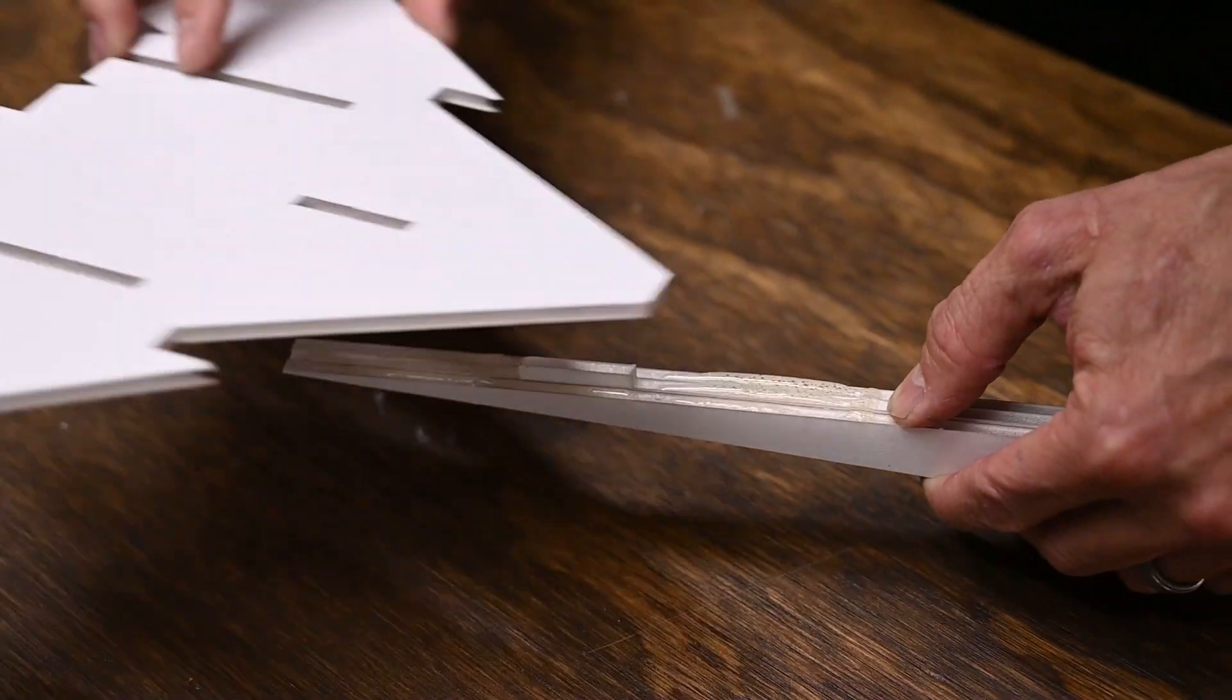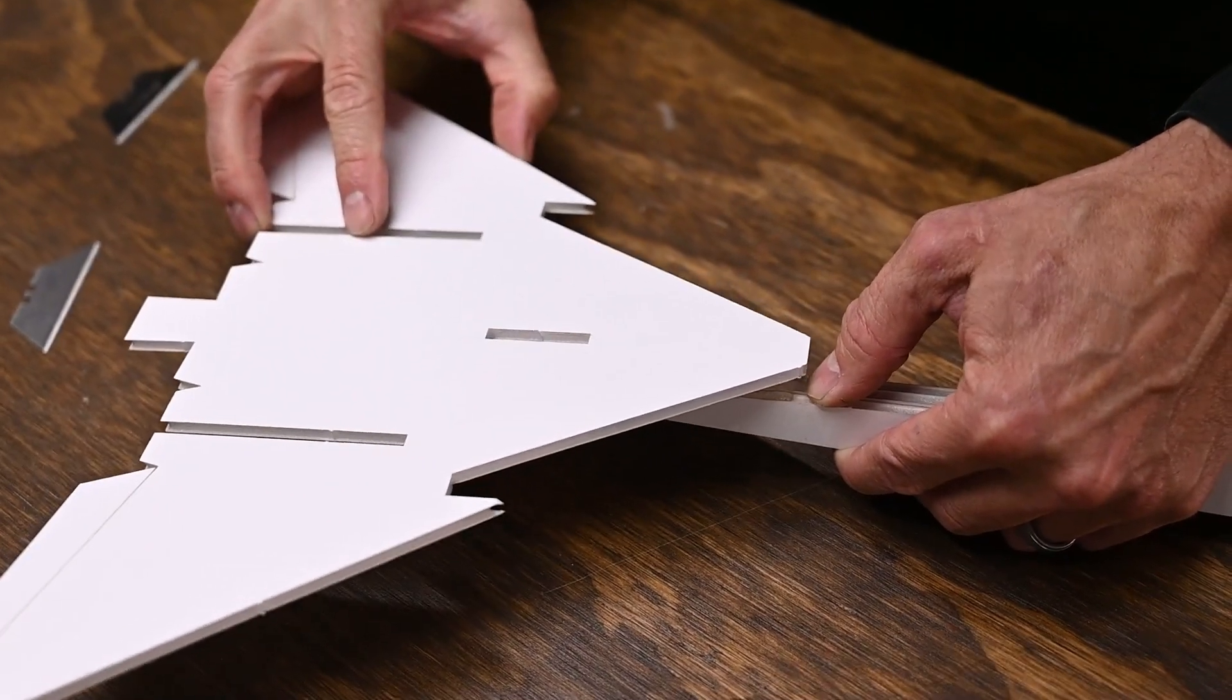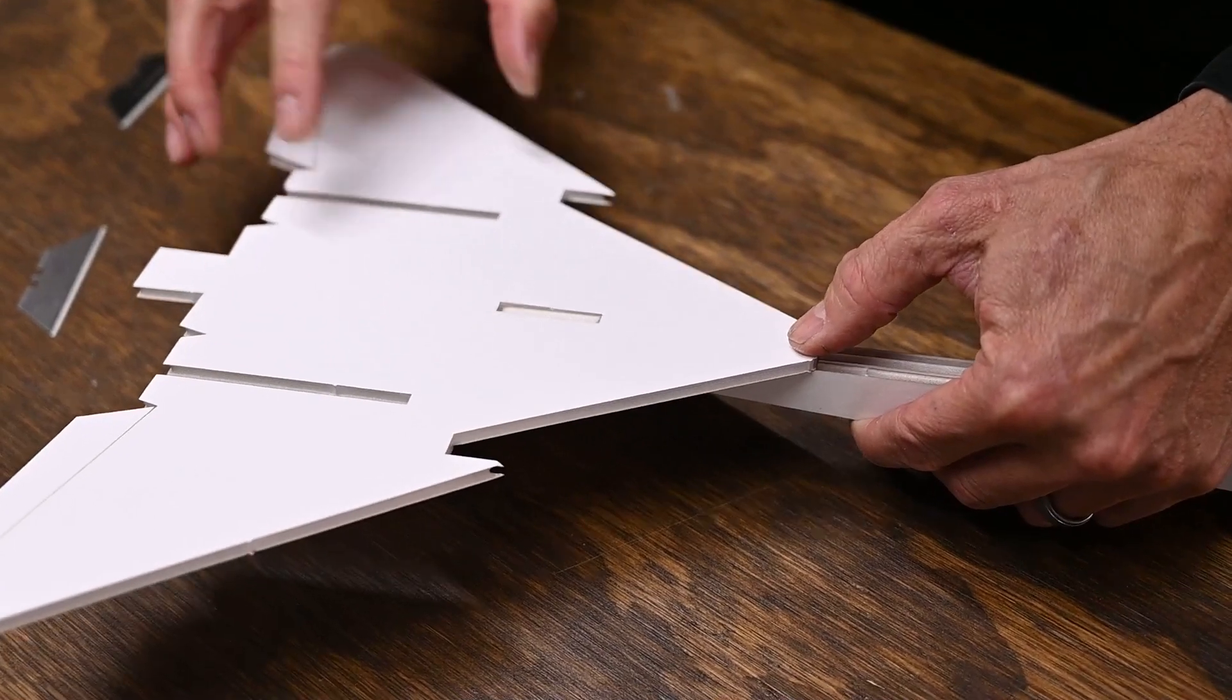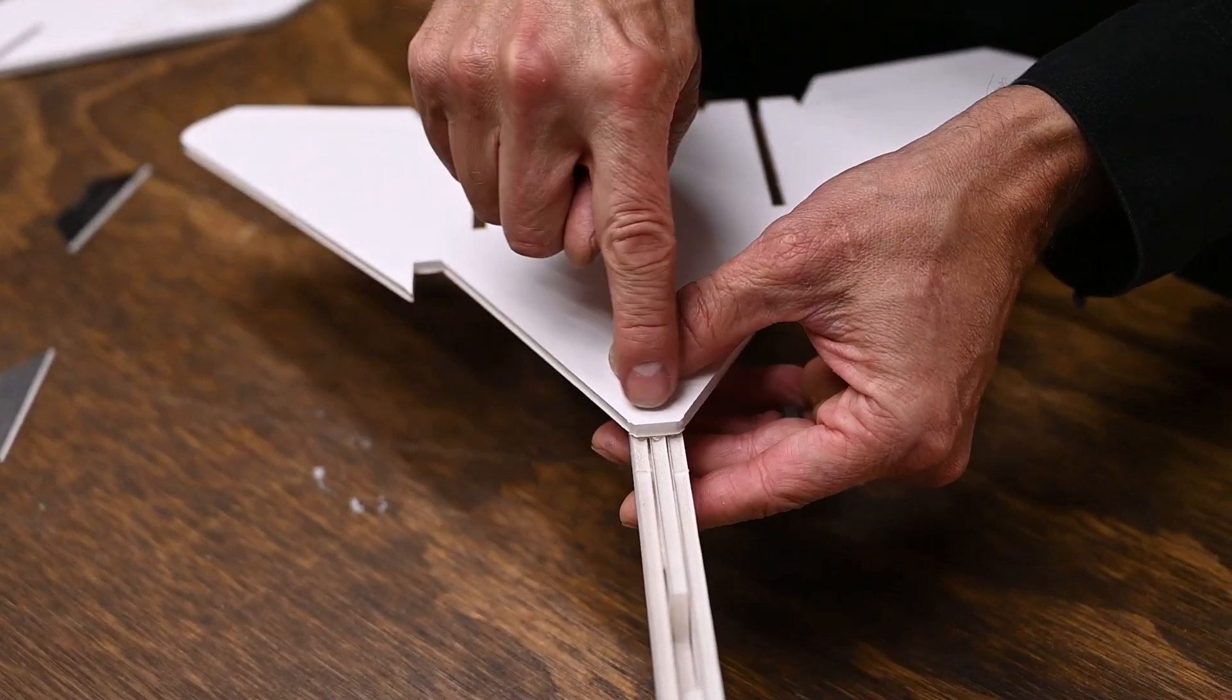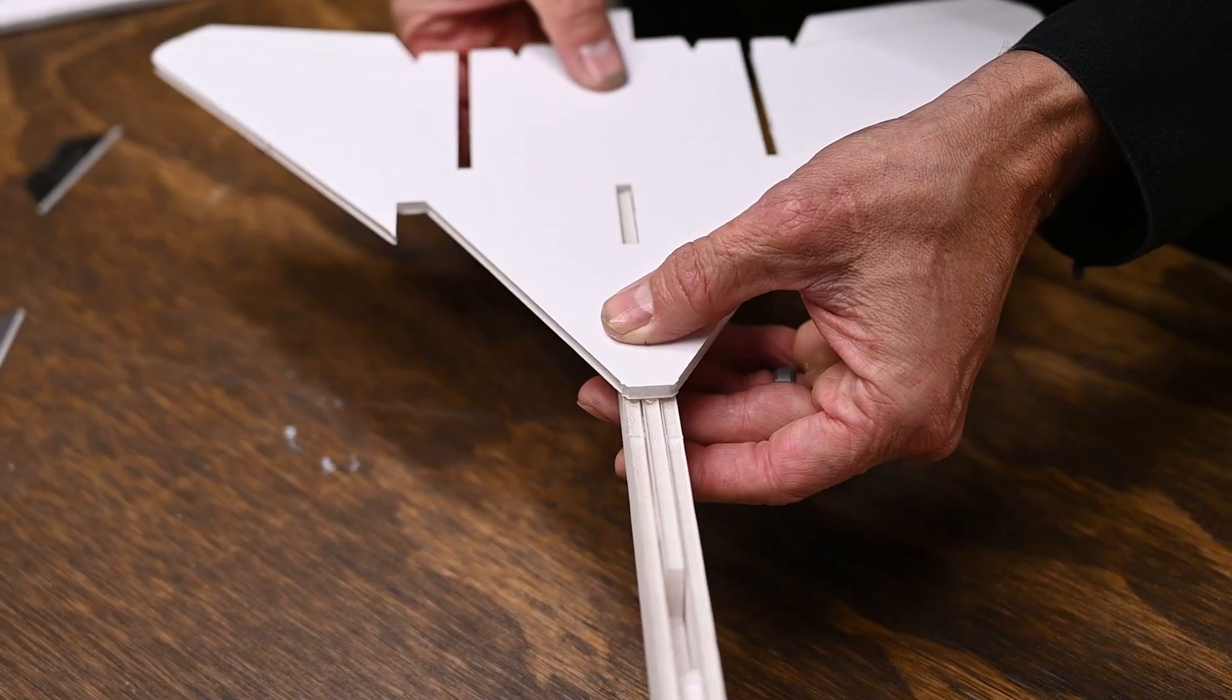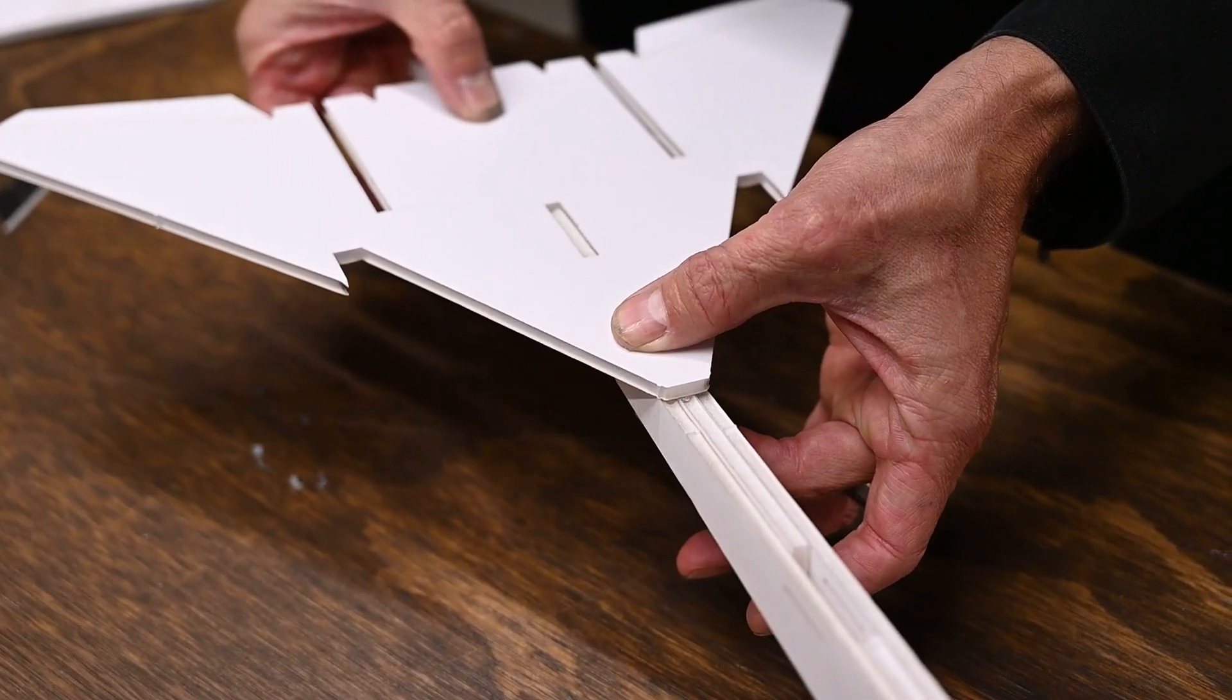Once we've got our glue added, we're going to reinsert the tab through the slot, and we're going to hold this in place. I want to make sure that I'm centered here at the front. I've got it pinched in two places, there at the front and there at the back. Hold that for a full two minutes while the glue cools.